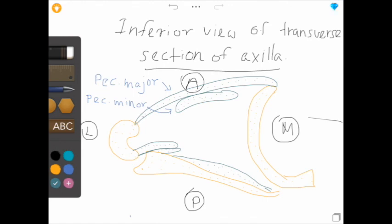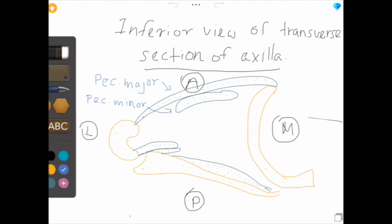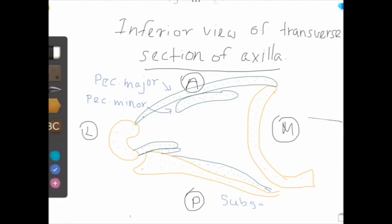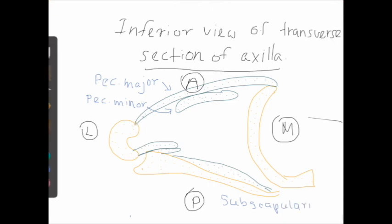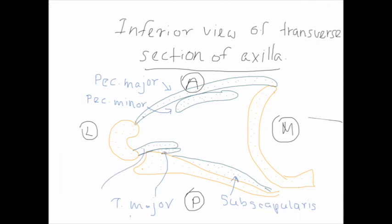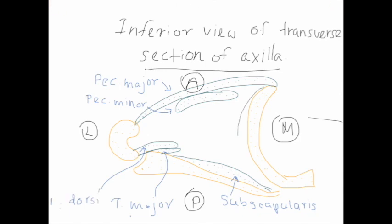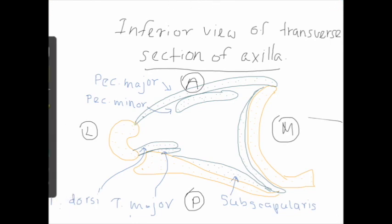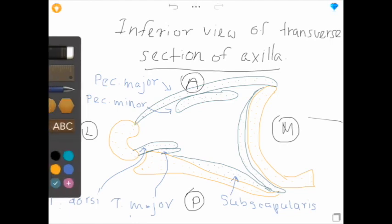The tendon of latissimus dorsi muscle is attached to the intertubercular sulcus of the humerus. Now carefully look at the labeling of the components of the posterior wall. This is the subscapularis muscle. Let's see the medial wall components. The medial wall is convex laterally and is formed by the upper part of the serratus anterior muscle. Serratus anterior originates from the superior eight or nine ribs and is inserted into the vertebral border and inferior angle of the scapula.